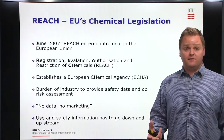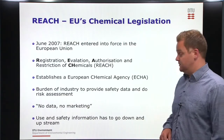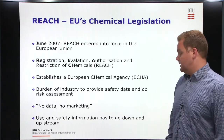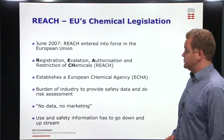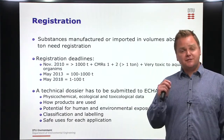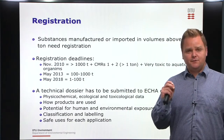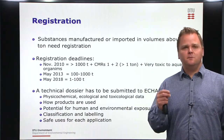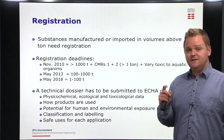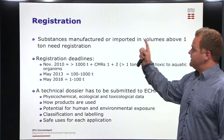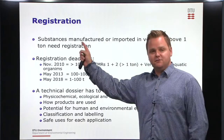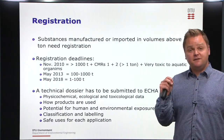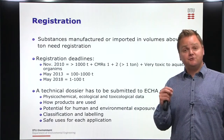Industry that does not provide the data is not allowed to market their products in Europe. It also states that use and safety information has to flow up and down the production and use stream. When it comes to registration of chemicals, REACH is very specific, and in that sense it is a good example of the very specific requirements that we very often see with command and control regulation. Substances manufactured or imported in volumes above one ton need registration according to the REACH regulation.